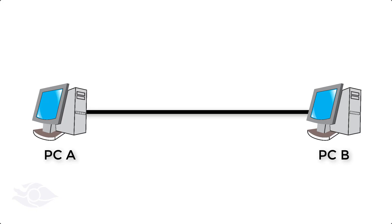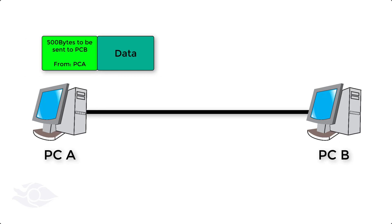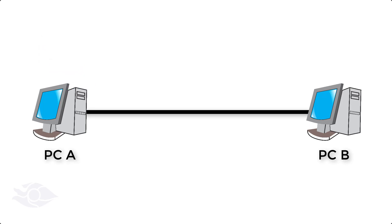When data is generated, it is necessary to attach processing information in every layer, such as how much data is transmitted and identifiers for the device sending the data and the device meant to receive the data, so it can be sent to the right destination.